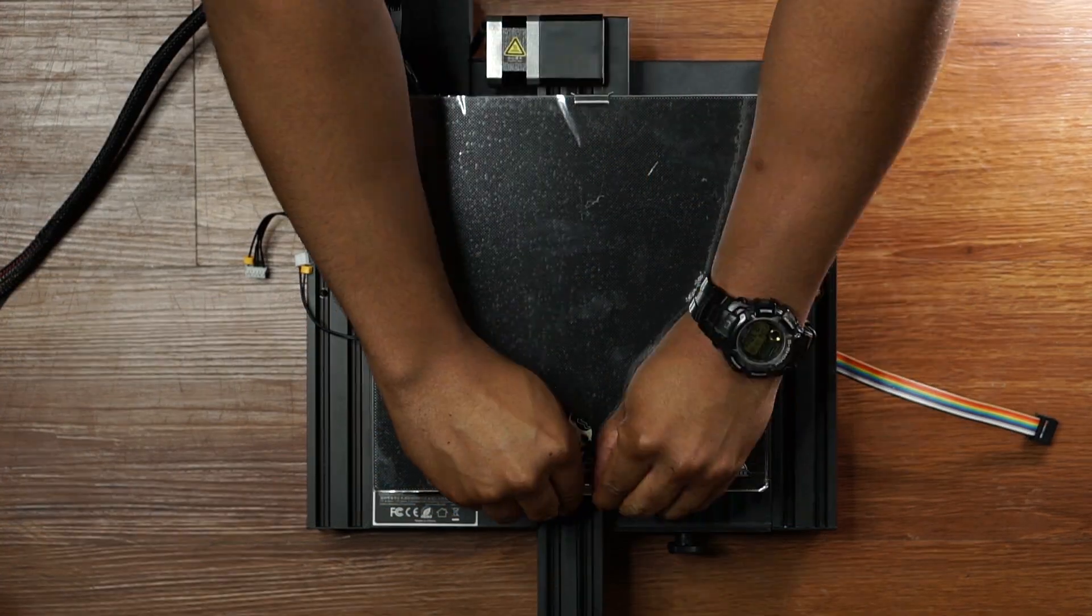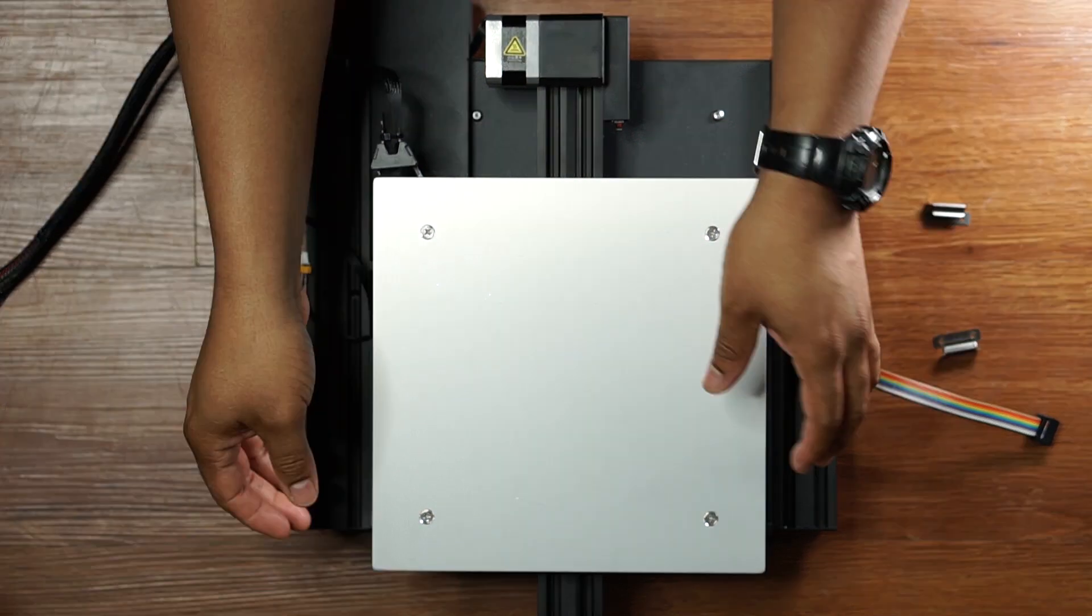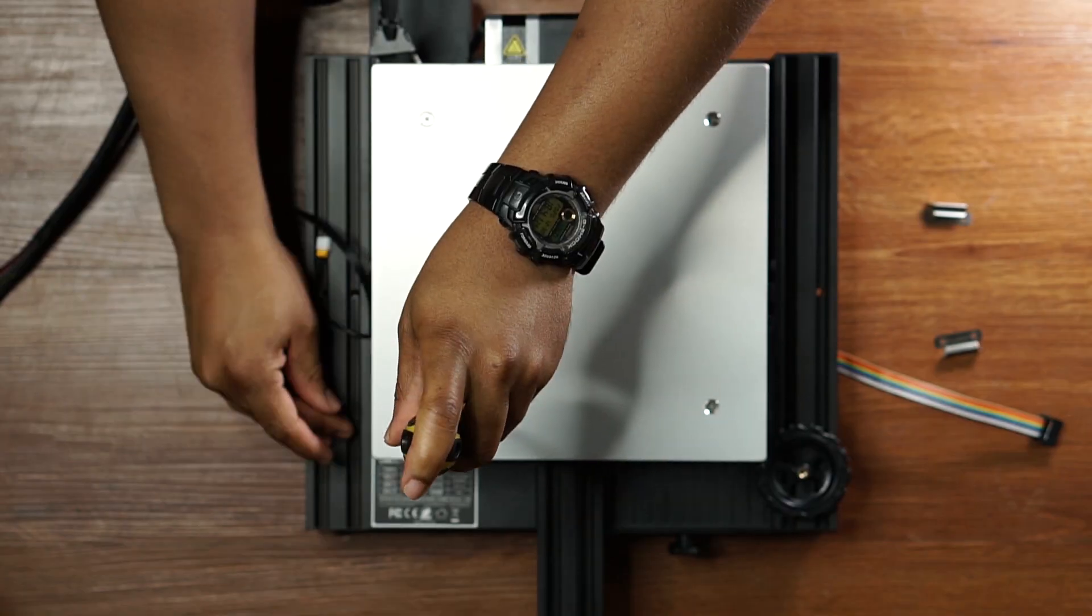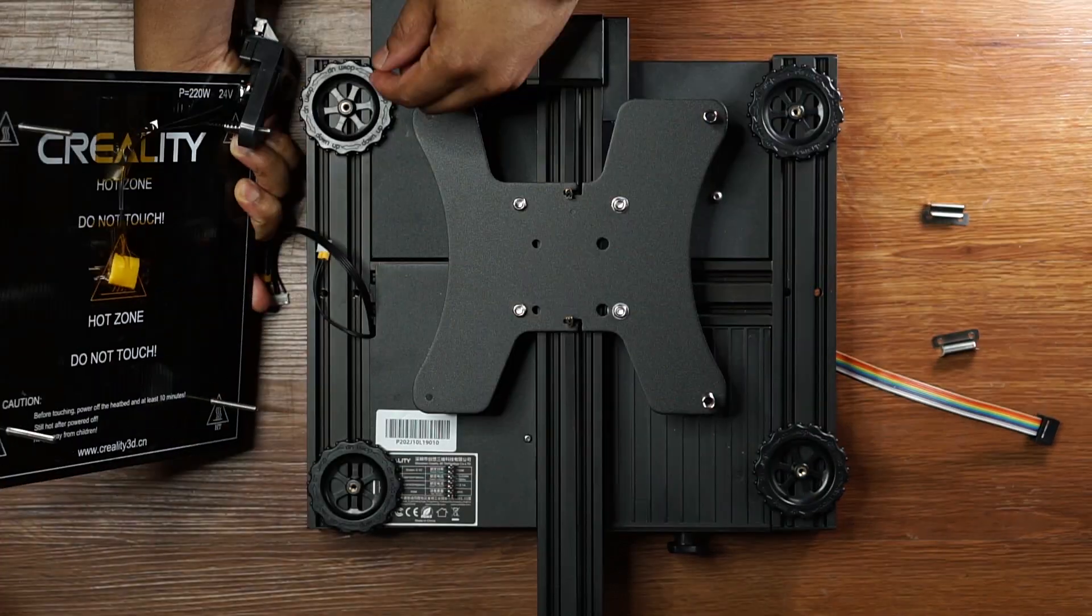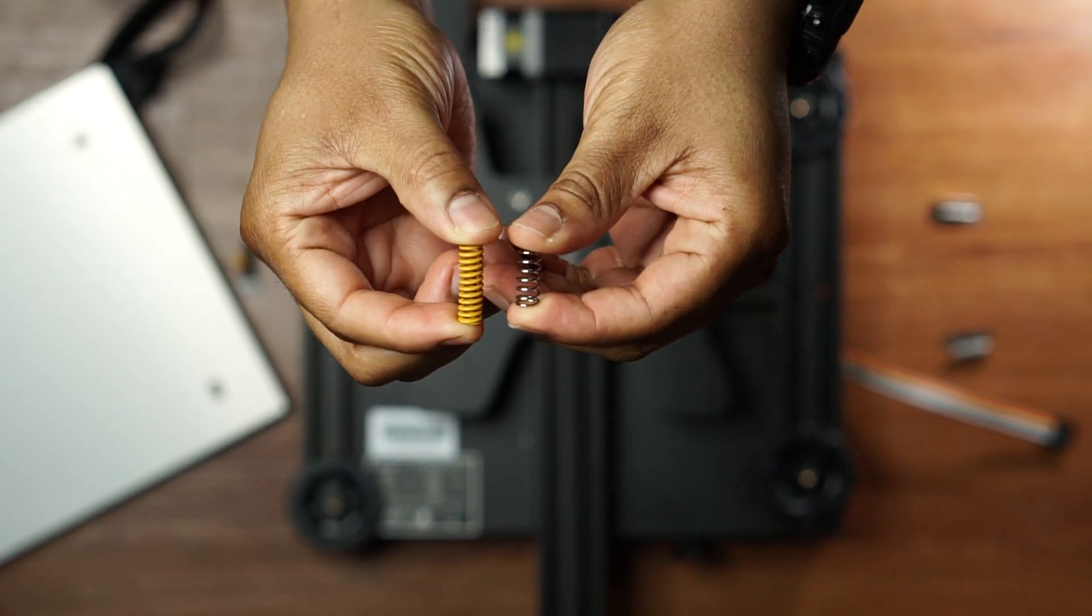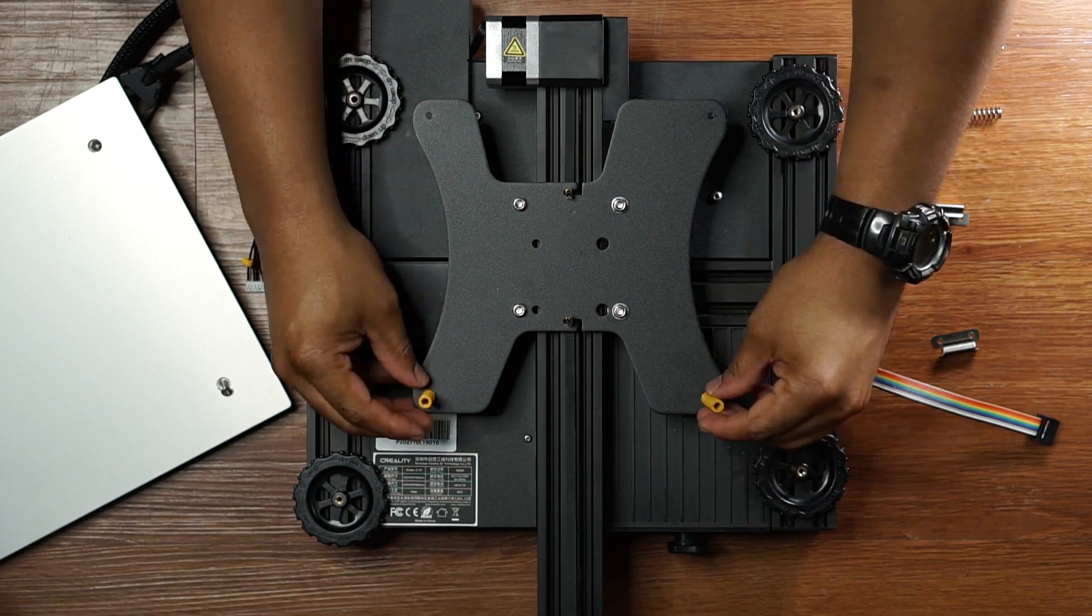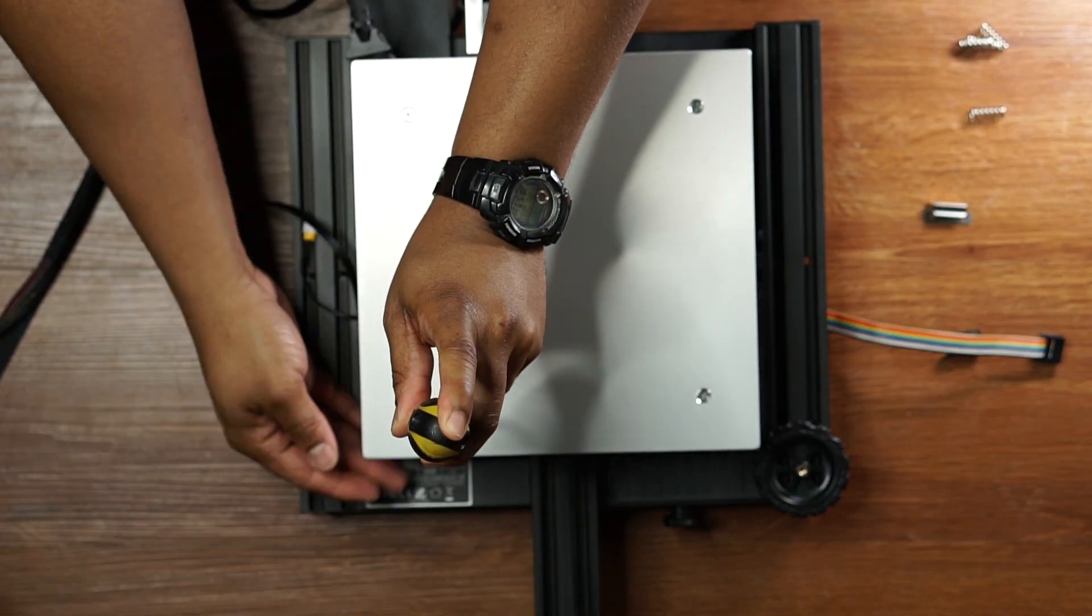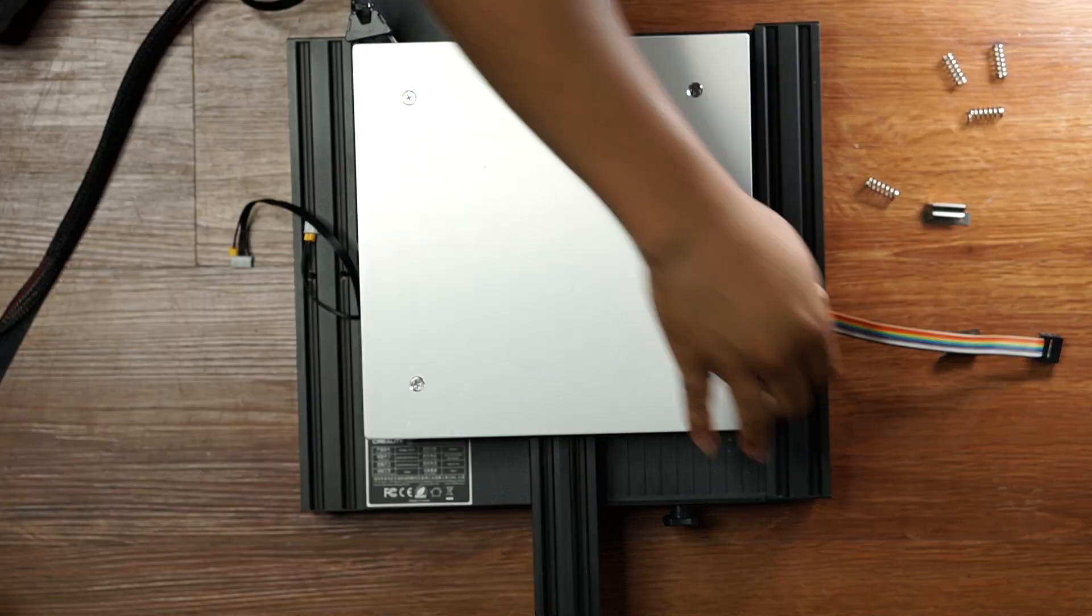Before we actually get started assembling, I wanted to do an immediate upgrade and I'm going to be upgrading the springs on the base of the printer. I watched a lot of videos before I bought this printer and this was highly recommended, so I wanted to go ahead and get it done to prevent any issues. I'm going to be using these yellow spring replacements. They're a bit longer than the original springs and they are a lot stronger, and they're going to overall help to just prevent you from having to continuously level your platform.